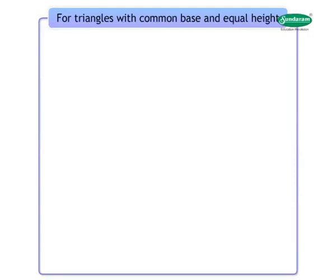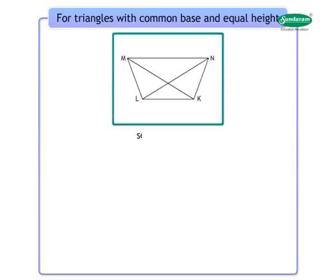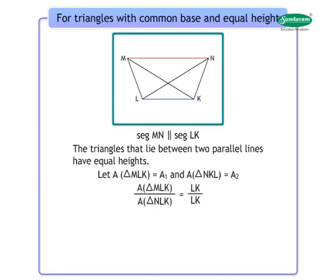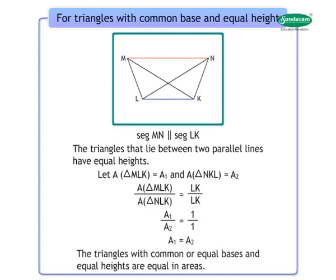For triangles with common base and equal height, look at the figure. Segment MN is parallel to segment LK. Triangles that lie between two parallel lines have equal heights. Let area of triangle MLK equal A1 and area of triangle NLK equal A2. Therefore, area of triangle MLK upon area of triangle NLK is equal to LK upon LK. So A1 upon A2 equals 1 upon 1, therefore A1 equals A2. Hence, triangles with common or equal bases and equal heights are equal in areas.